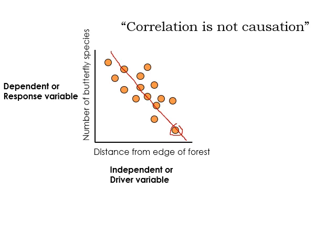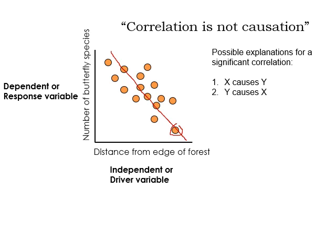You're probably familiar with the phrase 'correlation is not causation.' Have we ever really thought about it? One reason is that there are many possible outcomes that might describe a relationship. Possible explanation number one: you could be right — x causes y. Number two: y causes x. That's maybe not likely in this situation — I don't see how butterfly diversity could drive forest edge — but in complex ecological systems you could have causation totally backwards.